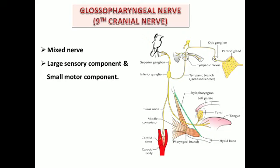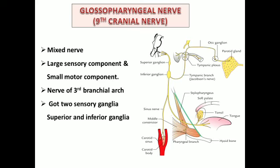The glossopharyngeal nerve is a mixed nerve that consists of sensory components and motor components. The sensory component is large, and the motor component is comparatively smaller, consisting of fewer motor neurons. This small motor component supplies a muscle called the stylopharyngeous muscle. The glossopharyngeal nerve is the nerve of the third branchial arch or third pharyngeal arch. In its course, this nerve has two ganglia — these are sensory ganglia called the superior ganglion and the inferior ganglion.